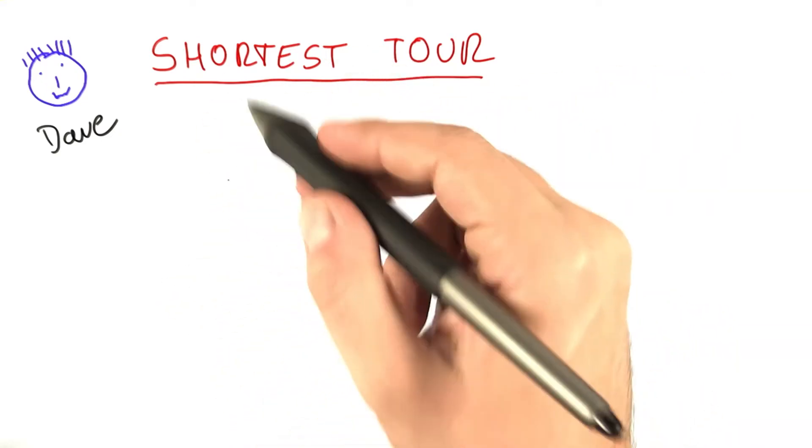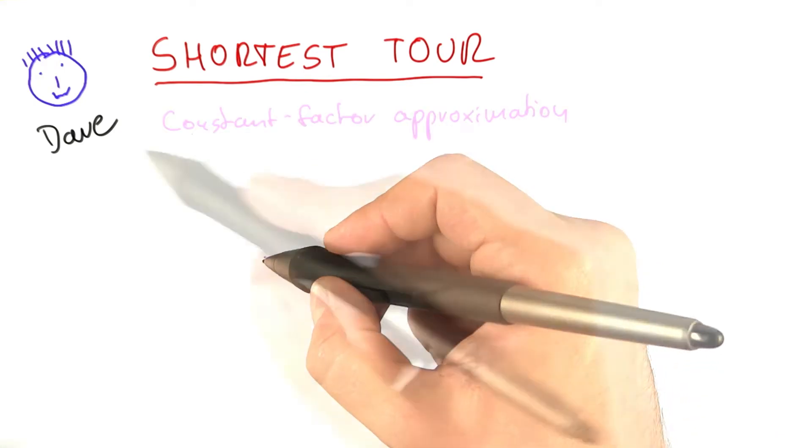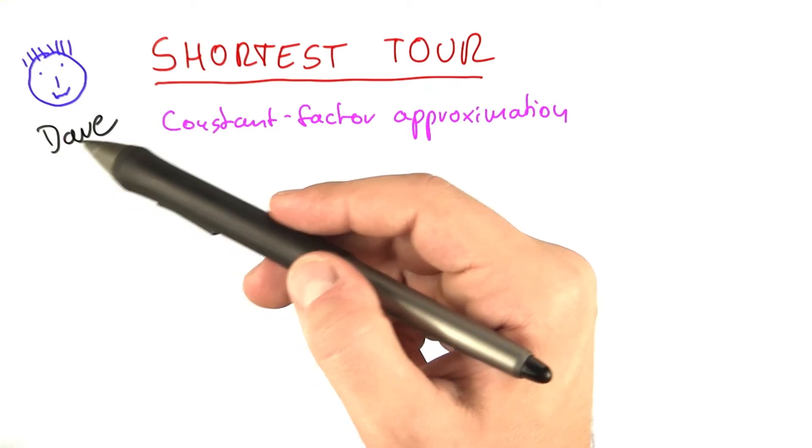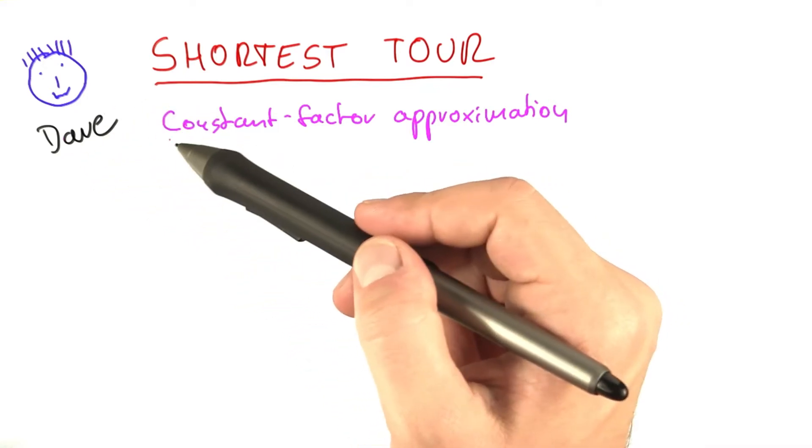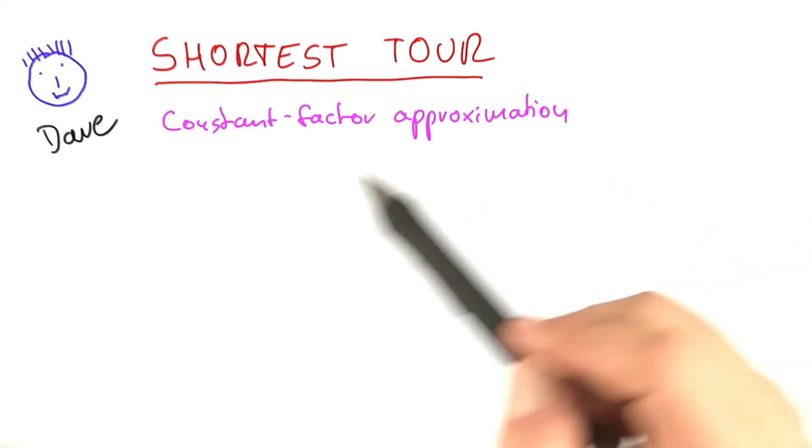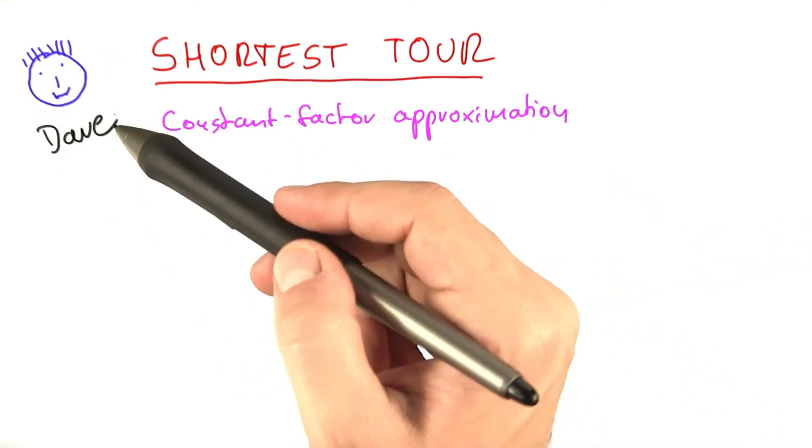there is a constant factor approximation algorithm for shortest tour. But since Dave is not that proficient in theoretical computer science, I think he doesn't really stand a chance of coming up with this algorithm himself. So you will have to pay close attention now to be able to explain it to Dave.